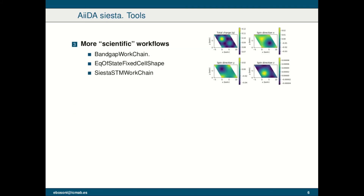Another tool we have is what we call more scientific workflows, which are simple work chains that calculate some basic physical quantities. For example, we have a bandgap work chain that calculates the bands and, in the case of a non-metallic system, the bandgap. Then there is the equation-of-state fixed-cell-shape work chain that performs seven SIESTA calculations at seven equidistant volumes and then performs the Birch-Murnaghan fit on the energy versus volume data to obtain the equilibrium volume and the bulk modulus. Finally we have the SiestaSTM work chain, which calls two different codes: first a SIESTA calculation to obtain the local density of states, and then the PLSTM external post-processing tool to obtain STM images.